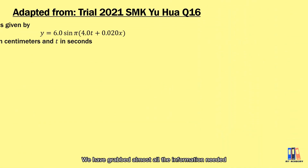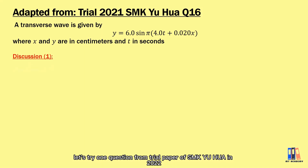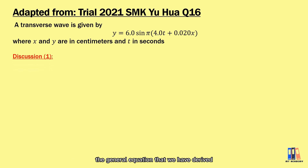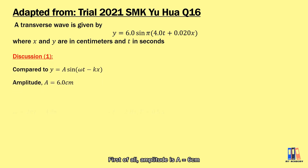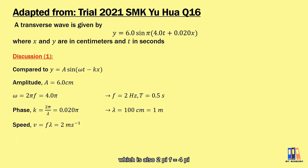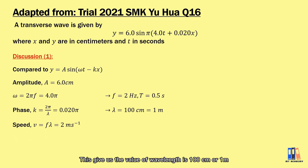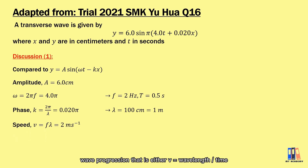Let's try a question from the 2021 SMK-UR trial paper. We are given the progressive wave equation in terms of time and displacement. Comparing with the general equation: amplitude = 6 cm; angular frequency ω = 2πf = 4π, giving frequency = 2 Hz and period = 0.5 s. For the wave number, k = 2π/λ = 0.02π from the equation, giving wavelength = 100 cm = 1 m. The wave propagation velocity is v = fλ = 2 m/s.